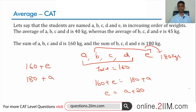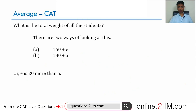From this we get that e equals a plus 20 — the heaviest of the five is 20 kilograms heavier than the lightest. That much we know. Now let's move to the next idea: we want to find the maximum and minimum possible averages, and we've established that e is 20 more than a.